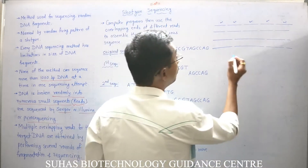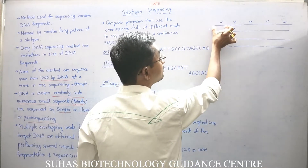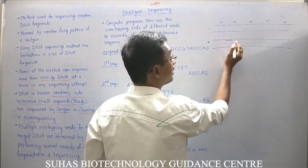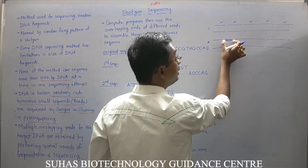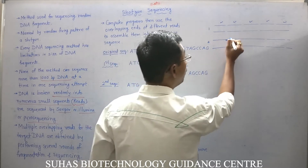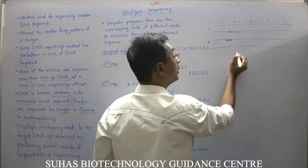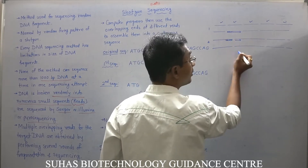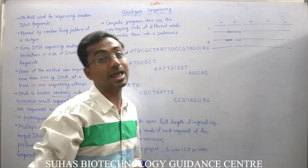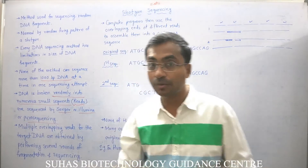In the first attempt, only one part of the DNA is sequenced, but in the second attempt a different part is sequenced, giving us more sequence data. We then match the sequence from the first attempt with that from the second, and in this way we keep matching the overlaps. Using these overlapping regions and computer programming, we can sequence the whole genome.